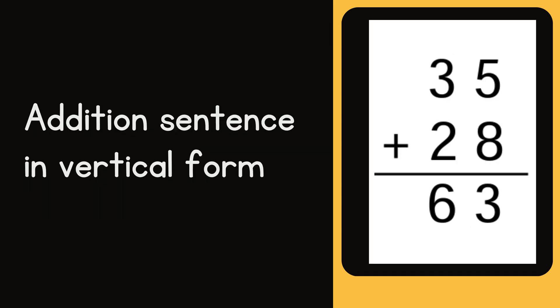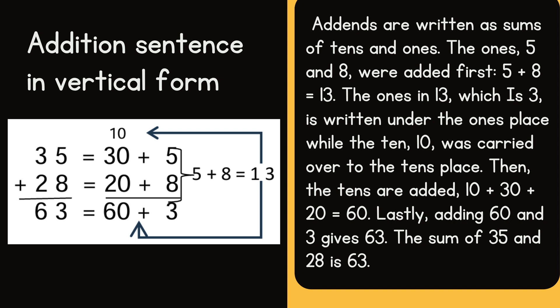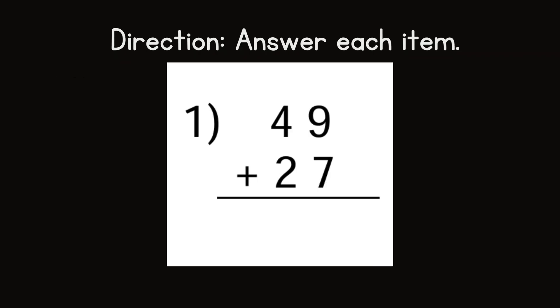This is the addition sentence in vertical form. In the addition sentence in vertical form, addends are written as sums of tens and ones. The ones, 5 and 8, were added first: 5 plus 8 equals 13. The ones in 13, which is 3, is written under the ones place, while the 1 ten was carried over to the tens place. Then the tens are added: 10 plus 30 plus 20 equals 60. Lastly, adding 60 and 3 gives 63. The sum of 35 and 28 is 63.